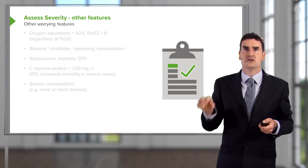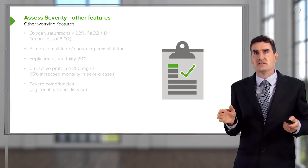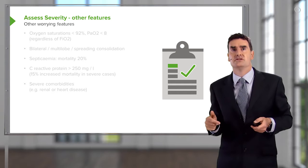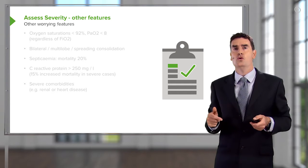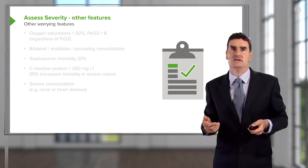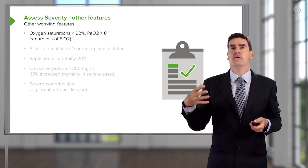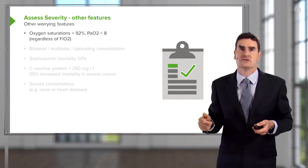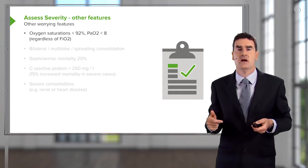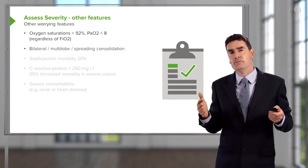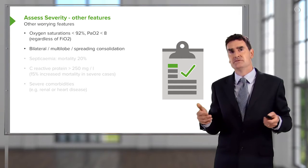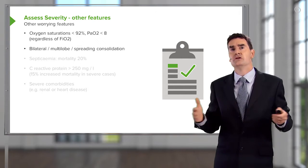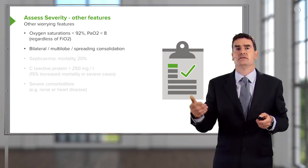As well as the CURB-65 score, there are other clinical features that can be used to identify patients who may have more severe disease. Worrying features include those who are hypoxic despite having a high inspired oxygen concentration, patients who seem to have more bilateral disease, or disease that spreads during the hospital admission despite antibiotics.